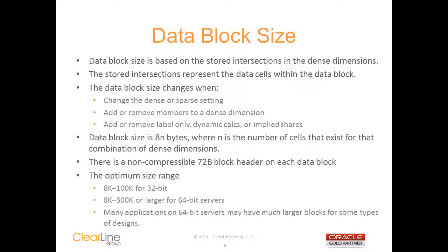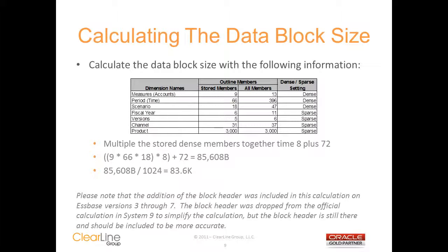It's important to have a block size of 8 to 100K on a 32-bit box, but you can have a block size of 8 to 300K on a 64-bit box, and you may even have some applications on 64-bit boxes that have much larger data blocks. Here is a simple example showing you how to calculate the size of a data block. You just need to identify the stored members in each of the dense dimensions and then multiply them together times 8 plus 72. In this example, you would multiply the 9 measures by the 66 time members by the 18 scenarios, then take that value times 8 to convert it to bytes and add the 72-byte block header.